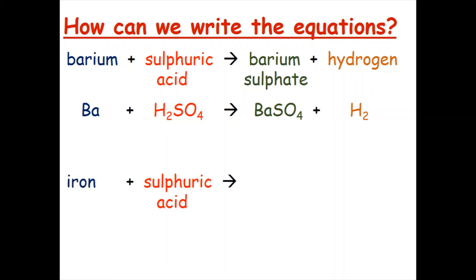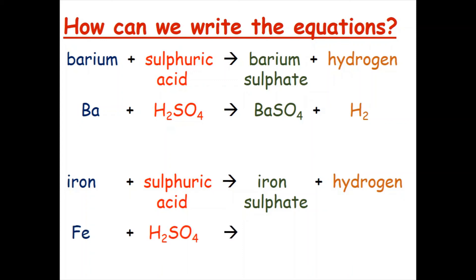Let's have a go at another example. This time the metal is iron, and iron is reacting with sulfuric acid. Again you can pause the video and have a think about what the two products could be. The salt that is formed is called iron sulfate, and again we are also forming hydrogen. The symbol for iron is Fe and the formula for sulfuric acid is H₂SO₄. This reacts to FeSO₄ for iron sulfate plus H₂. Again we do not have to balance this equation — it is already balanced.